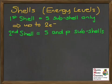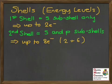Now, the second shell, slightly different, has an S and a P subshell. Two electrons go into an S subshell, and up to 6 into a P subshell, so that's going to give us up to 8 electrons that we can fit into the second shell.